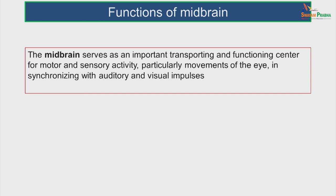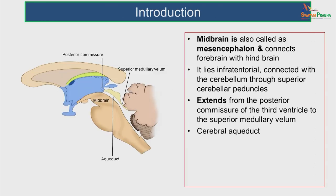The midbrain serves as an important transporting and functioning centre for motor and sensory activity, particularly the movements of the eye in synchronizing with auditory and visual impulses — that is, when somebody hears, you turn your head and see. This coordination of head and neck movements with eye and ear activity takes place in the midbrain.